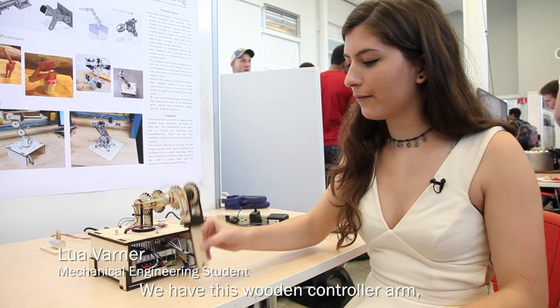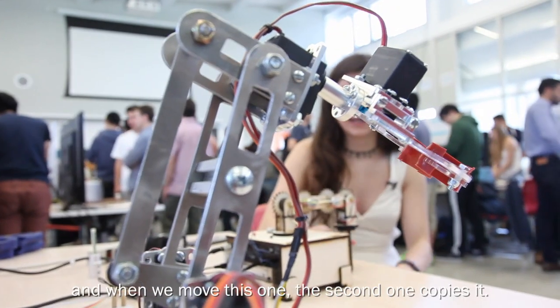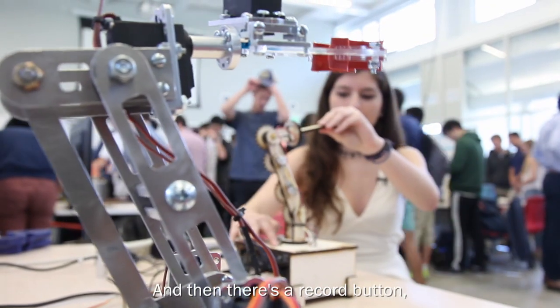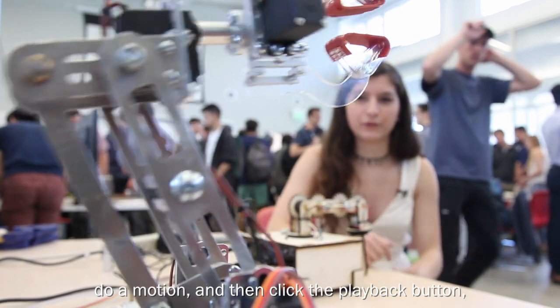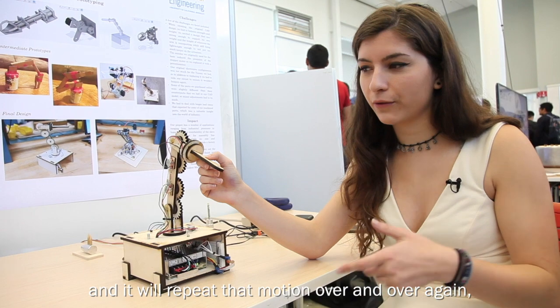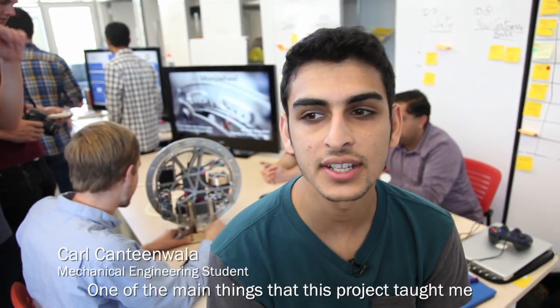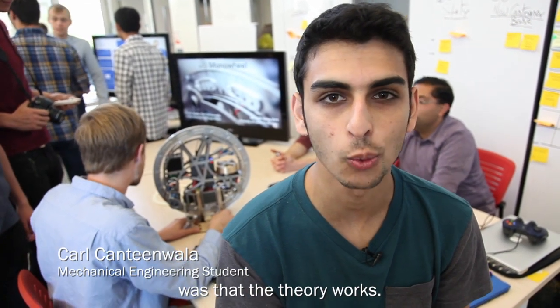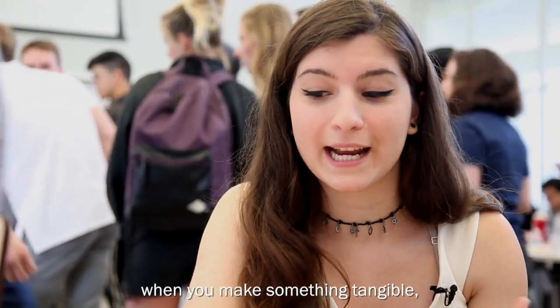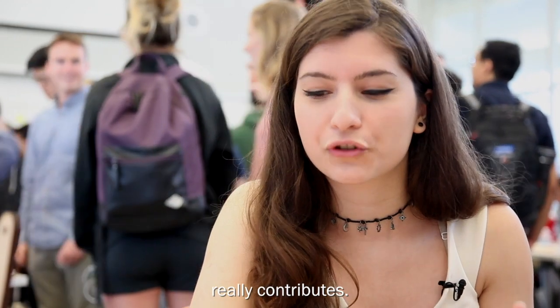We have this wooden controller arm and we have a second robotic arm and when we move this one, the second one copies it and then there's a record button where you can press the record button, do a motion and then click the playback button and it will repeat that motion over and over again. One of the main things that this project taught me was that the theory works. But it really all comes together when you make something tangible that everyone can see that everything you learn really contributes.